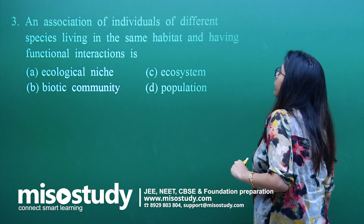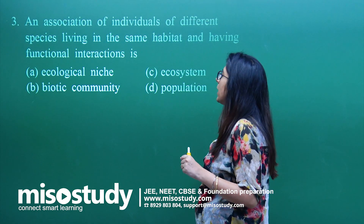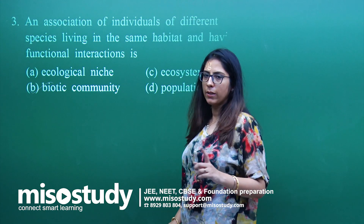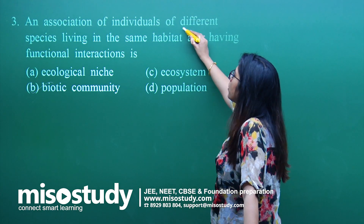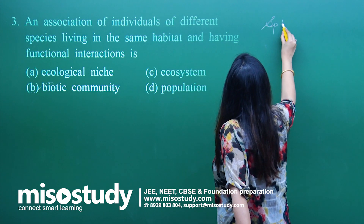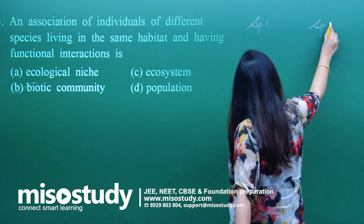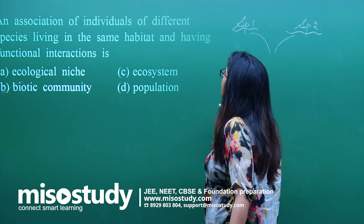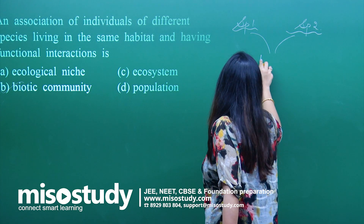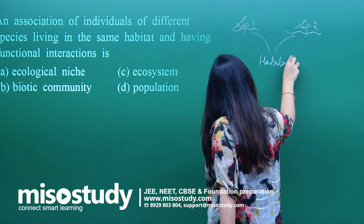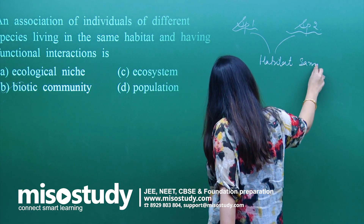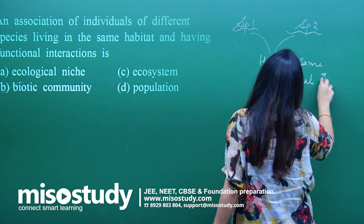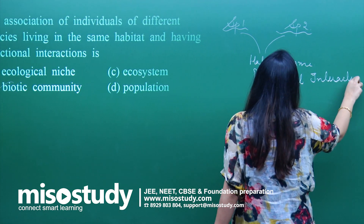Question number 3: An association of individuals of different species living in the same habitat and having a functional interaction is termed as — A) biotic community. They are saying we have two species, species 1 and species 2, both living together with the same habitat and showing functional interaction.